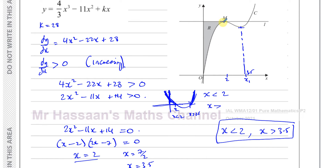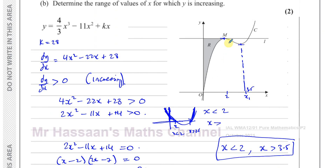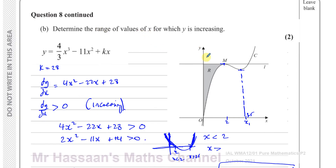So between x = 2 and x = 3.5 the function is decreasing. The range of values of x for which y is increasing is x < 2 and x > 3.5. We found this either by solving the quadratic inequality or by identifying both turning points and reading off the graph. That's the answer to part B.